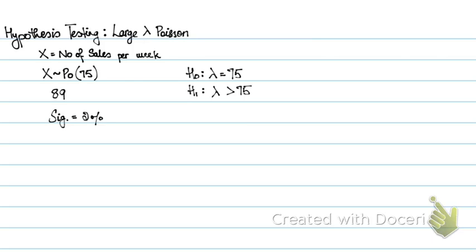First we need to find the probability of X ≥ 89, because 89 is my observed value. If my critical region is on the right-hand side, the probability I need is X ≥ my observed value all the way to the extreme right. So I need the probability of X ≥ 89.